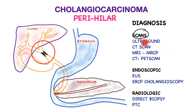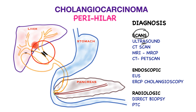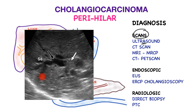The ultrasound scan is usually the first investigation. It is non-invasive and uses sound waves reconstituted as an image. Typically it shows the bile tubes which are more dilated than usual due to obstruction, but may not show the cancer itself. In this ultrasound picture you can see the dilated bile tubes congregating towards a tumor at the hilum of the liver.